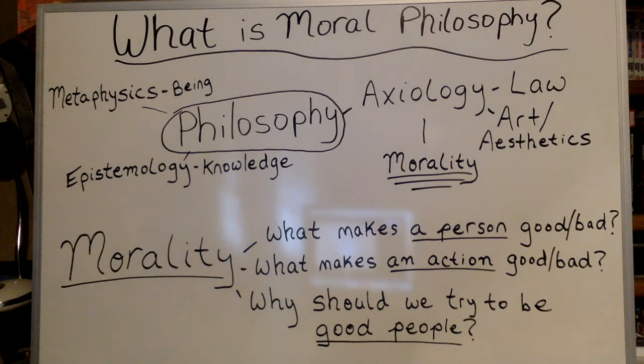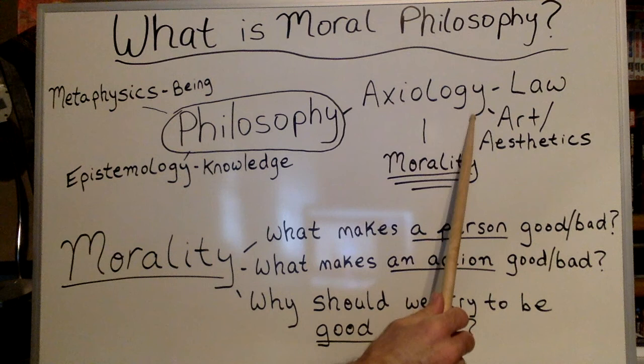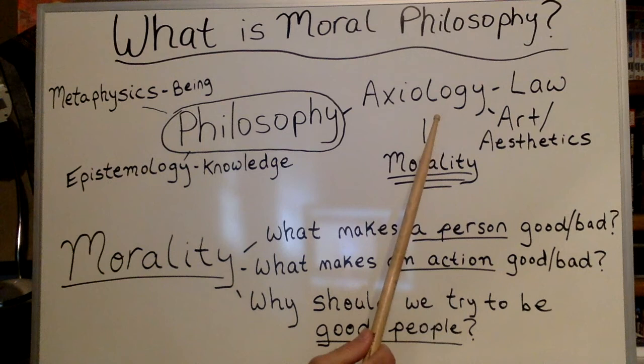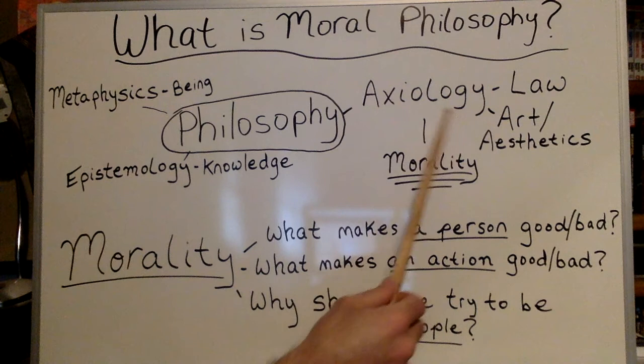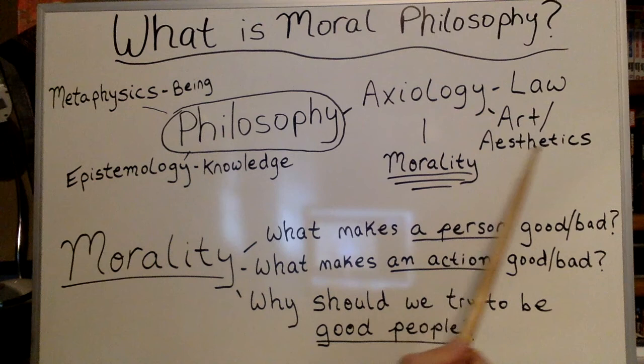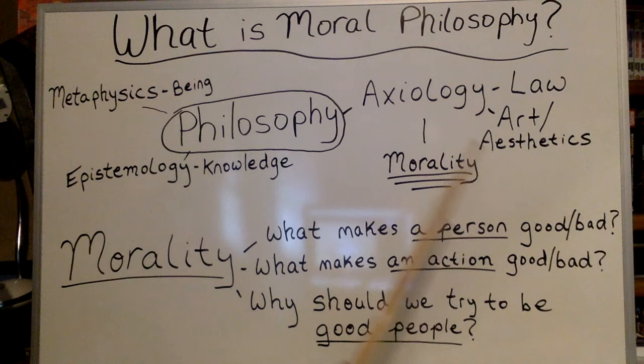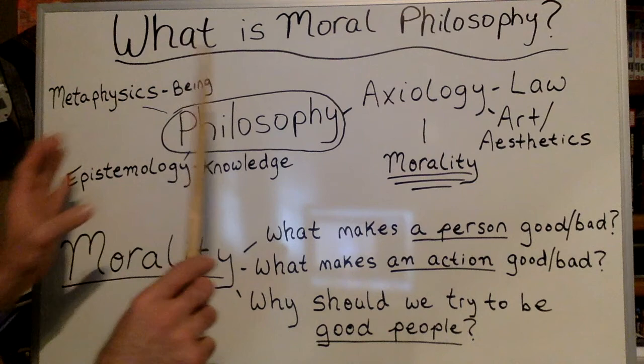What we're going to be talking about falls under the branch of axiology. Axiology, generally speaking, is the branch of philosophy that deals with making value judgments. Those can occur in a bunch of different contexts. Some of the most important are law, art — or philosophy of art, which is really known as aesthetics — and morality specifically, which is our focus here. So just to give you some context on what we're studying, it's really a very small part of the whole study of philosophy.